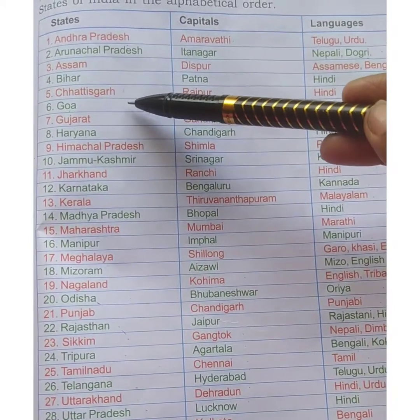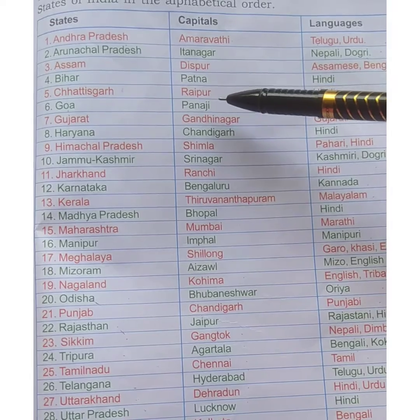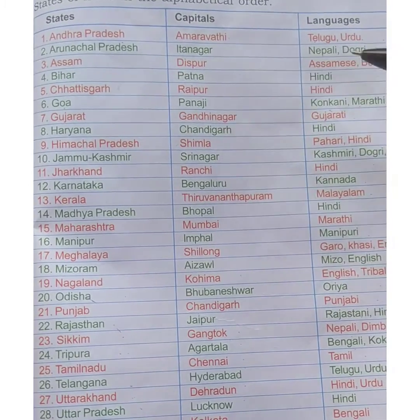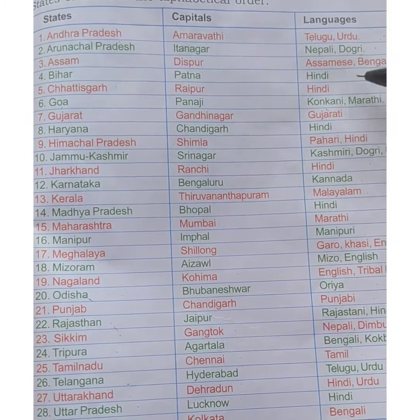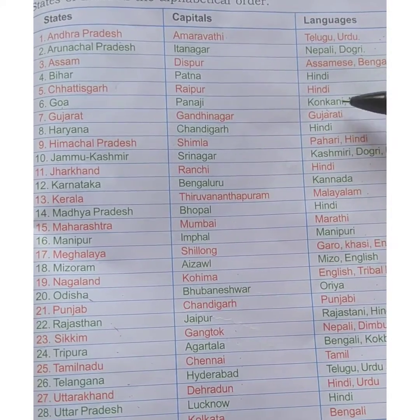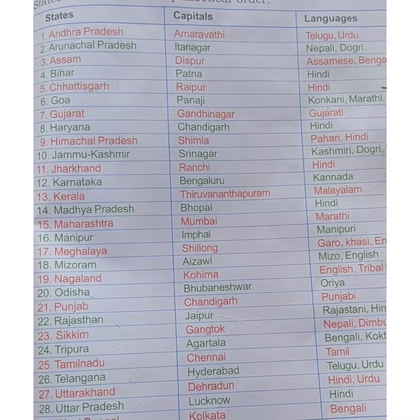Next is Goa. The capital is Panaji and the languages spoken are Konkani and Marathi.